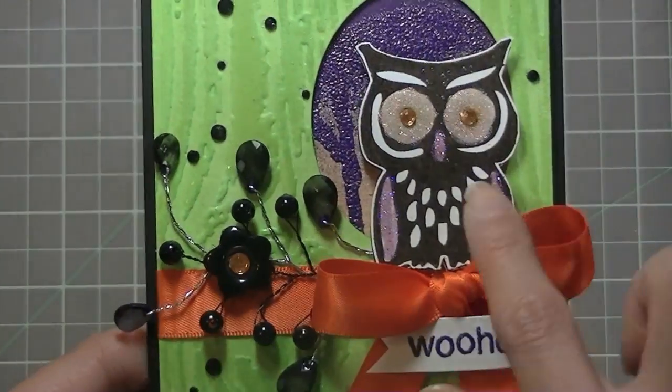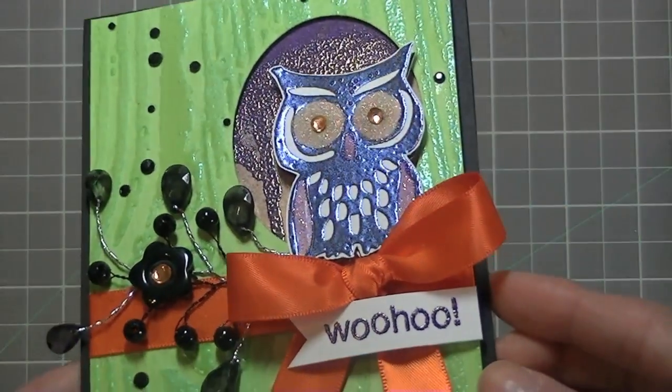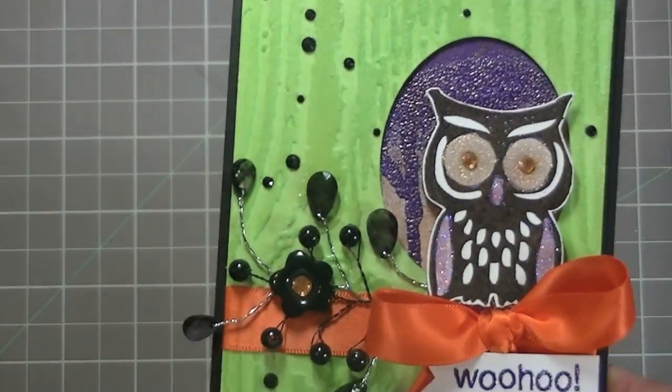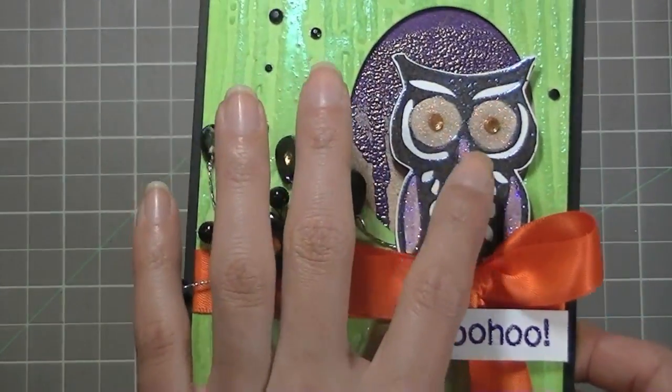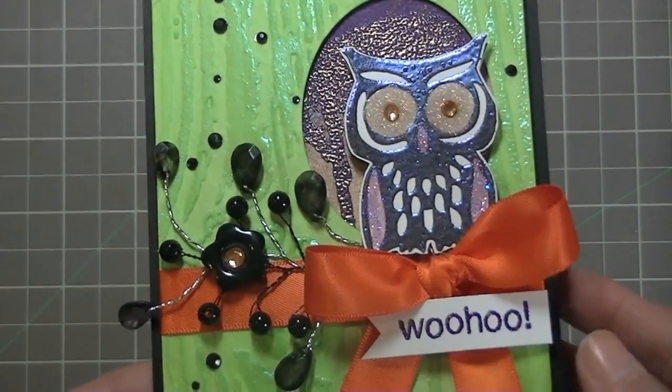I did that because I still wanted the owl to be black, but I wanted some extra dimension to the color. You've seen my projects - you know that I like to stamp black underneath and then put a different color embossing powder on the top just to give it a little bit more interest.